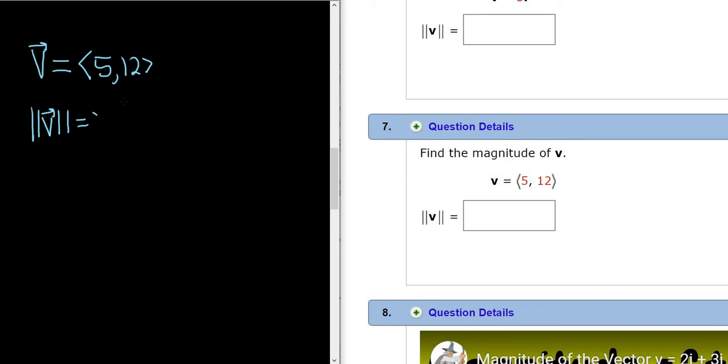The formula for the magnitude of v is the square root of the first component squared, which I'll call a, plus the second component squared, which is b. This is in the case where v is equal to the vector a, b. So this is the formula you want to use.